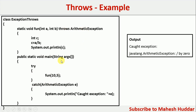In this case, it will not generate an error because 10 divided by 5 is equal to 2, so 2 will be displayed. But if the value of b or the second parameter is 0, it will generate that exception and you will get the corresponding output.